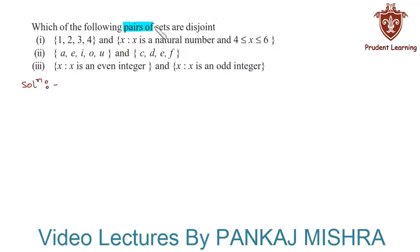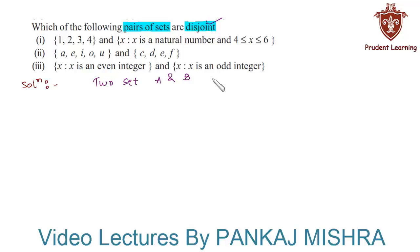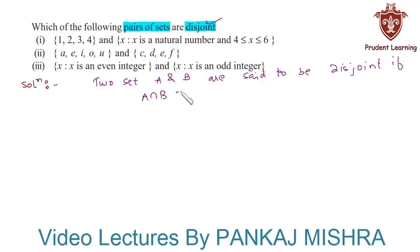Which of the following pairs of sets are disjoint? We need to find if they are disjoint. Before jumping into the solution, let us recall the definition of disjoint sets. Two sets A and B are said to be disjoint if the intersection between the sets is an empty set — that is, if the intersection of A and B is an empty set, then we can say that the given sets are disjoint.